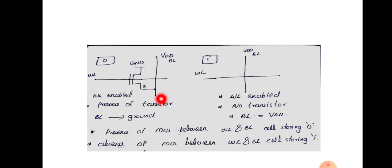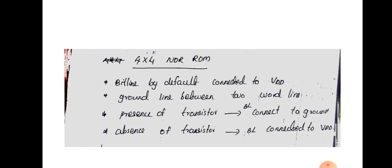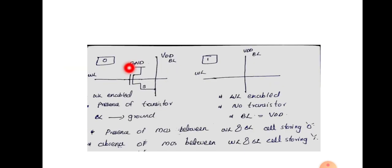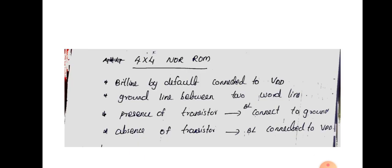The bit line is connected to VDD, with a ground line between two word lines. So, for designing a 4 by 4 array of NOR, we have to take the ground connection. Here, for each MOS transistor, we need a ground connection. So, we are taking a common ground and that ground line will be drawn between two word lines.